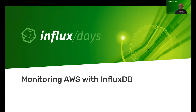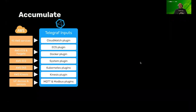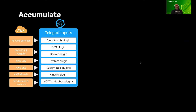Thank you very much, Shashi. That was a great overview. Now I'd like to talk about how to monitor AWS with InfluxDB. With our time series data platform, it really breaks down to three areas: accumulate, analyze, and act. Let's first look at the accumulate piece in the context of AWS.